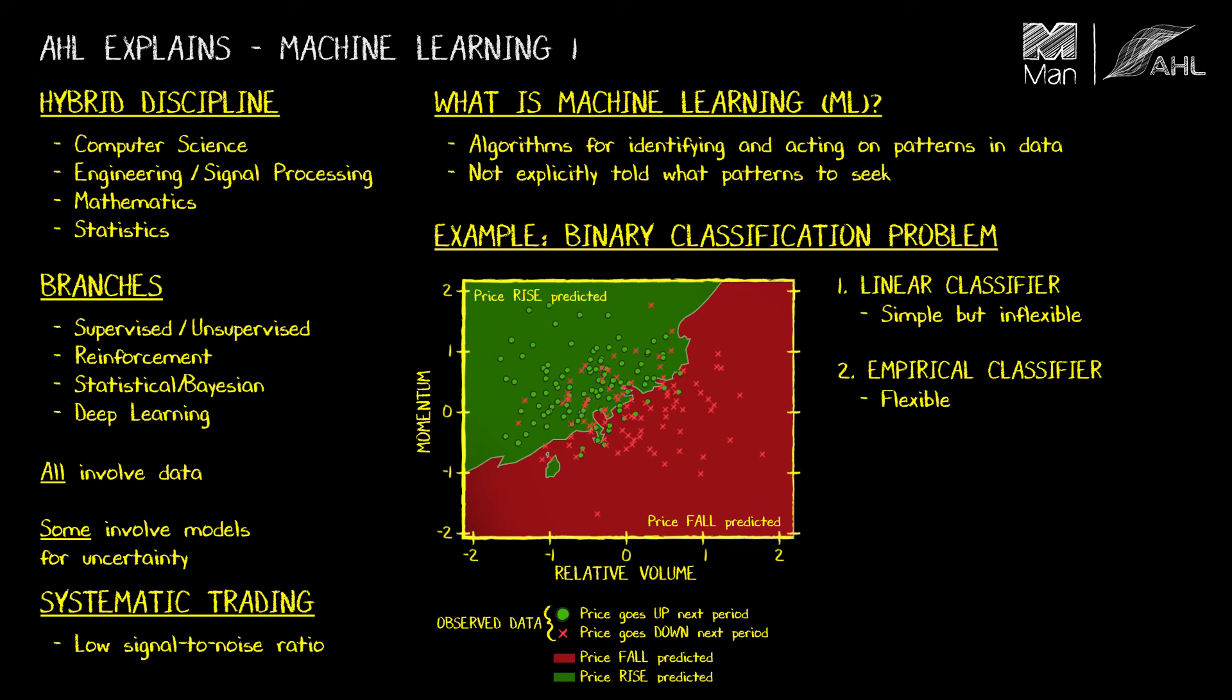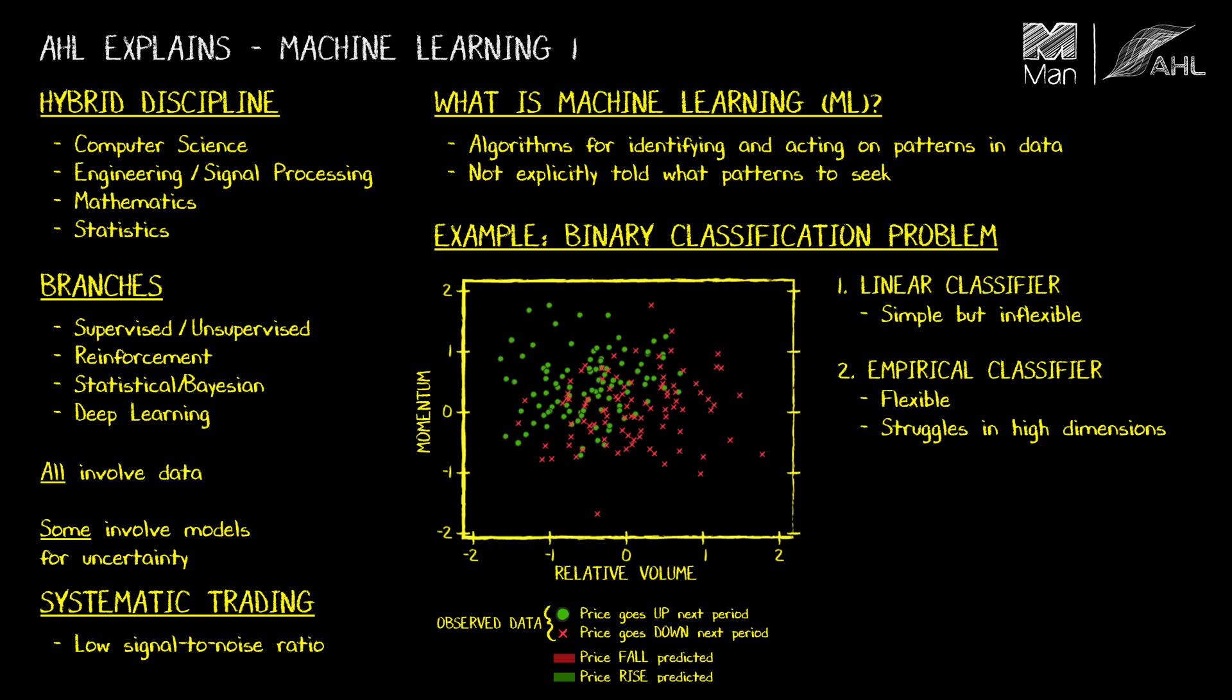Now, empirical methods like this can be really useful in low dimensional problems, but they will struggle in high dimensional cases where there are large numbers of predictors. This is called the curse of dimensionality. And the other thing about machine learning, we should say, is that machine learning algorithms typically are ones that scale well as the dimensionality of the problem increases.